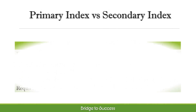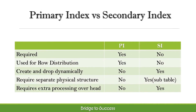Let's see the difference between primary index and secondary index. PI is required for a table, whereas SI is not. Primary index is used for data distribution. Secondary index can be created and dropped dynamically. SI requires extra physical structure for the subtable and requires extra processing overhead.